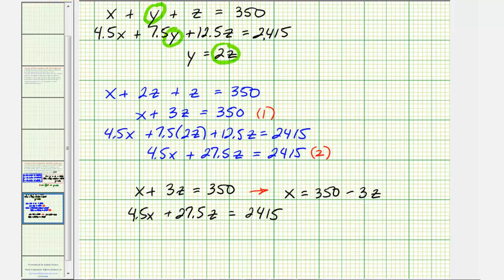Now we'll substitute 350 minus 3z for x in the second equation. This will finally give us one equation with one unknown. We have 4.5 times (350 minus 3z) plus 27.5z equals 2415.